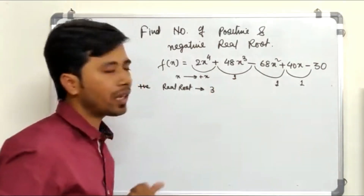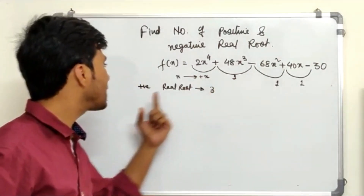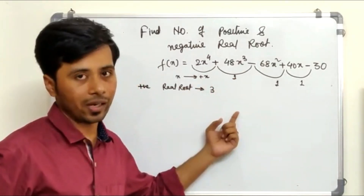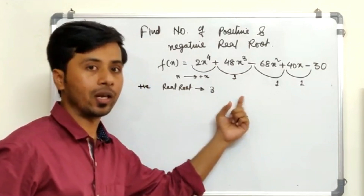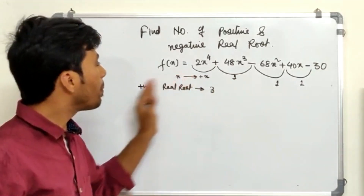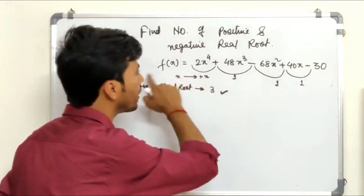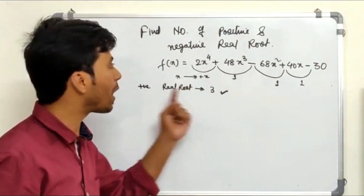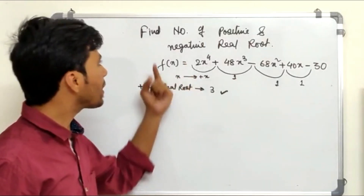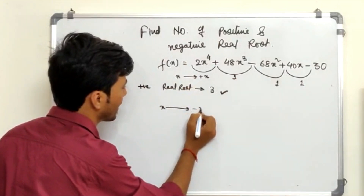One more thing: Descartes' rule of signs tells you that the maximum number of positive real roots is 3. It might be 1 as well — it can be lower than 3. What this rule tells you is that positive real roots cannot exceed 3 in this polynomial. Now, to find negative real roots, substitute -x in place of x.